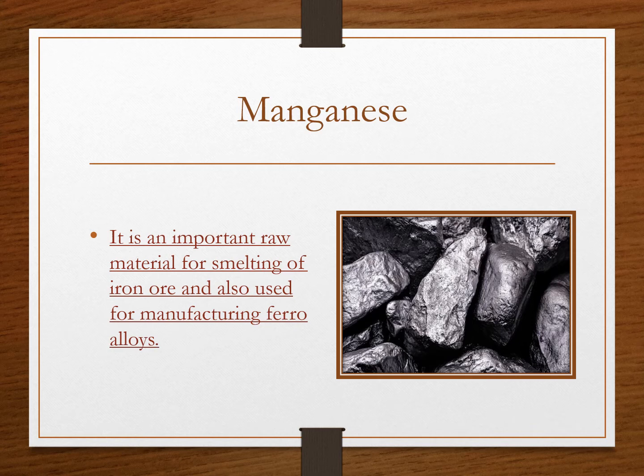Manganese is an important raw material for smelting of iron ore and is also used for manufacturing ferro alloys. Manganese deposits are found in almost all geological formations; however, it is mainly associated with the Dharwar system.